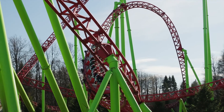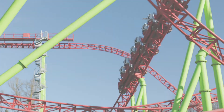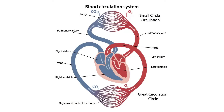Ever ride on a roller coaster? It is a complicated route of loops and turns, but there is only one route the ride can follow — that is similar to the blood flow through the heart. As the blood enters the heart from the body, it flows through the vena cava and enters the right atrium. The right atrium contracts, pushing blood into the right ventricle. When the right ventricle contracts, it pushes blood out of the heart to the lungs, where it picks up oxygen. The oxygenated blood then travels back to the heart and enters the left atrium. As the left atrium contracts, it pushes the oxygenated blood into the left ventricle, and finally out of the heart through the aorta, carrying oxygen around the body.